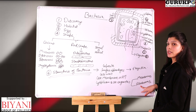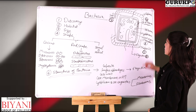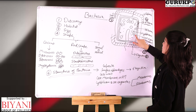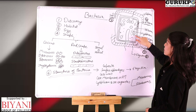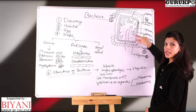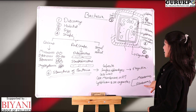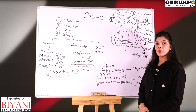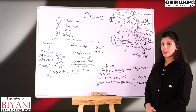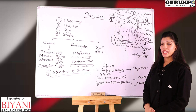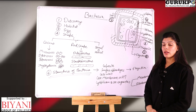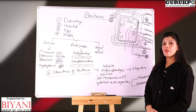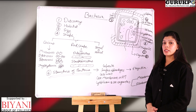The two organelles present are: first, the mesosome, and second, the ribosomes. Mesosomes help in respiration. Ribosomes in bacteria are of the 70S type, and their two main subunits are 30S and 50S subunits. The main function of ribosomes is protein synthesis.